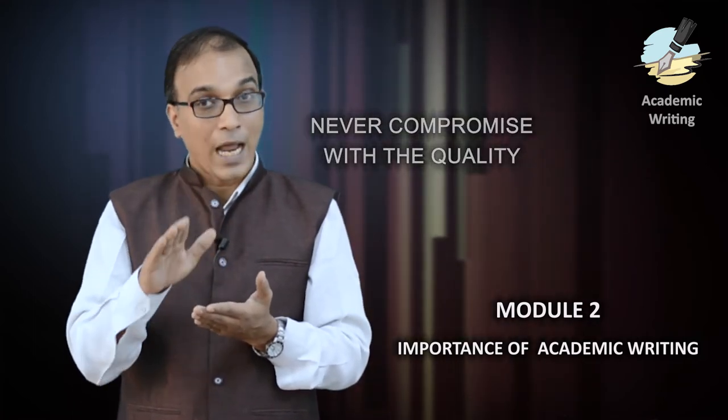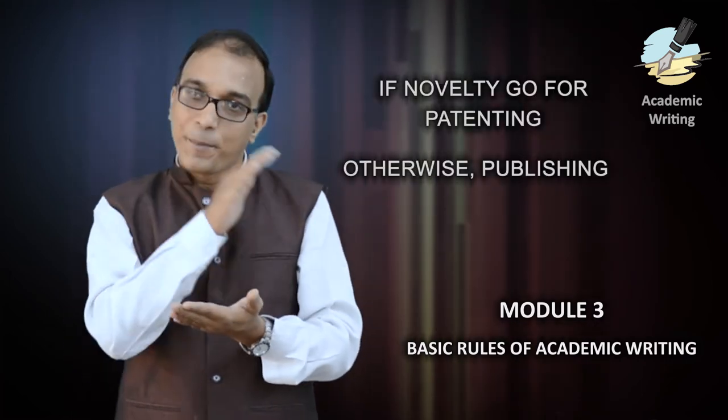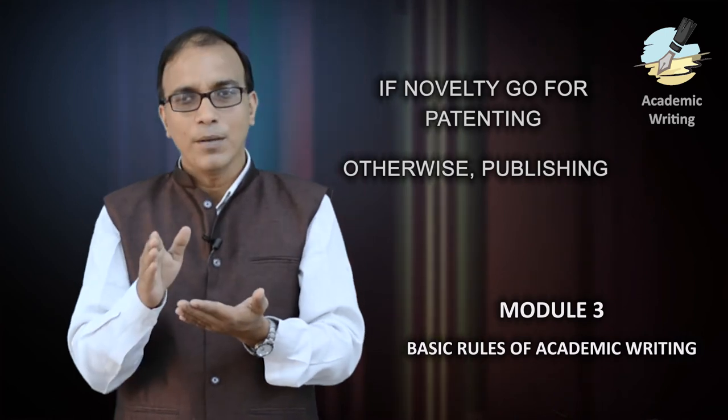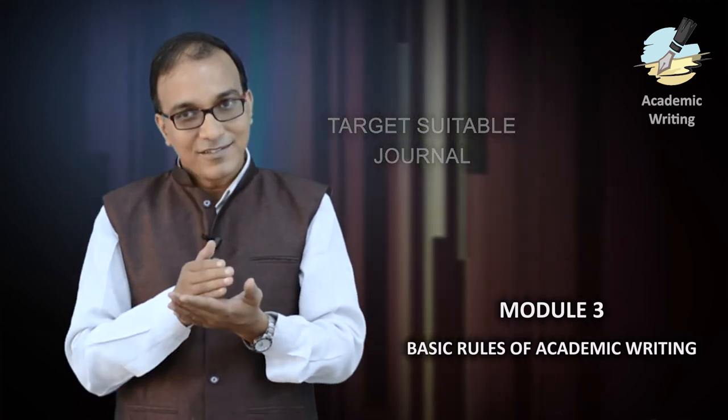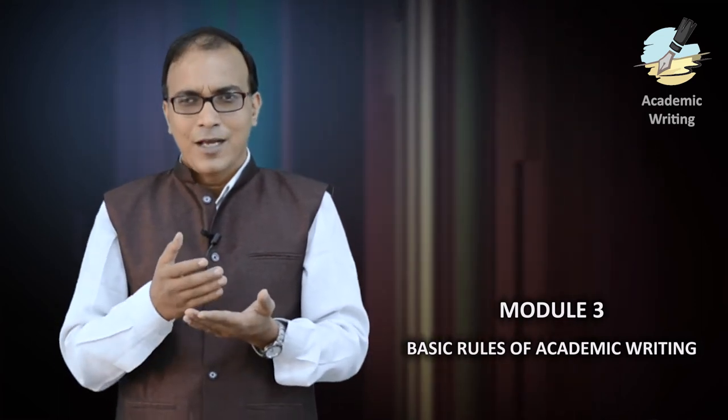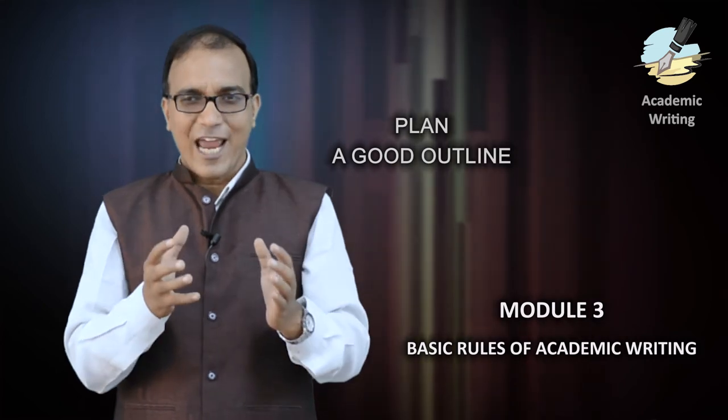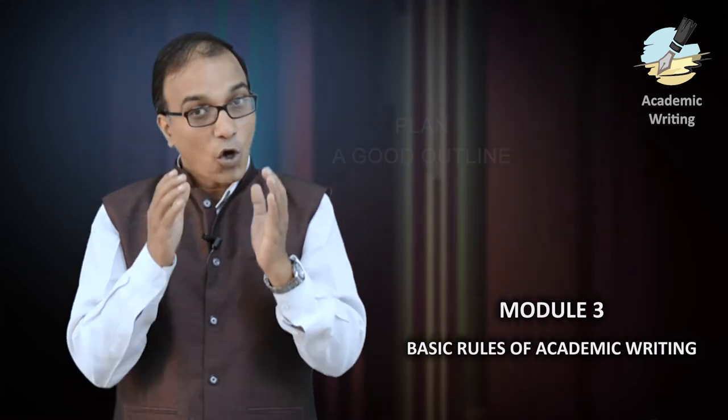Don't fall into the trap of predatory journals. In Module 3, we discussed the basic rules of academic writing: start early, check if there is novelty — go for patenting if applicable, otherwise go for publishing. Target a suitable journal based on impact factor, indexing, scope, and article processing charges. Then plan a good outline and stick to the author's guidelines of that journal.